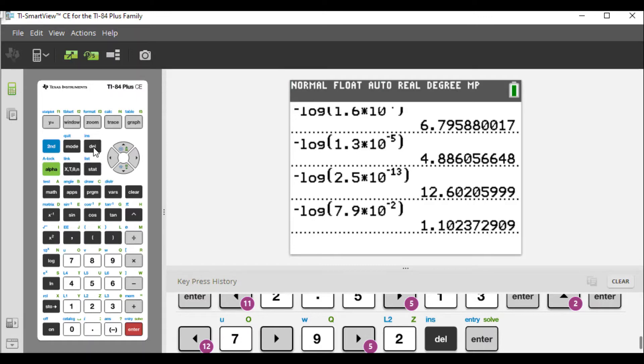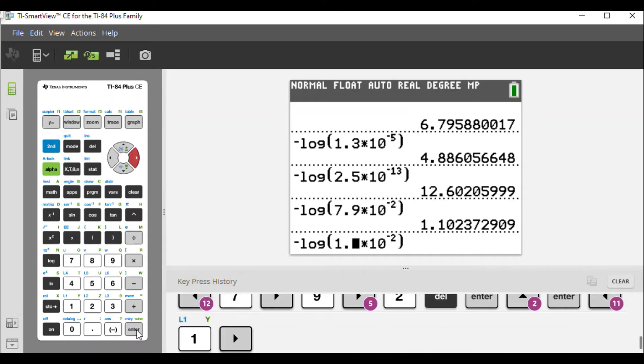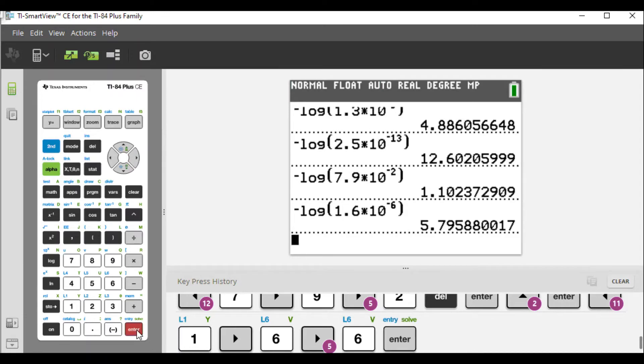And finally for the last one, we hit enter, we're going to type in this case 1.6 times 10 to the negative 6 power. 1.6 times 10 to the negative 6, and this is 5.795 but really 5.8.